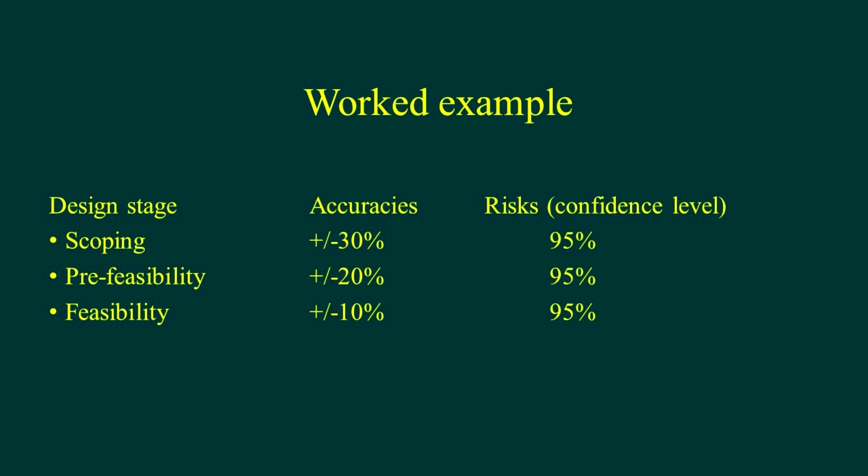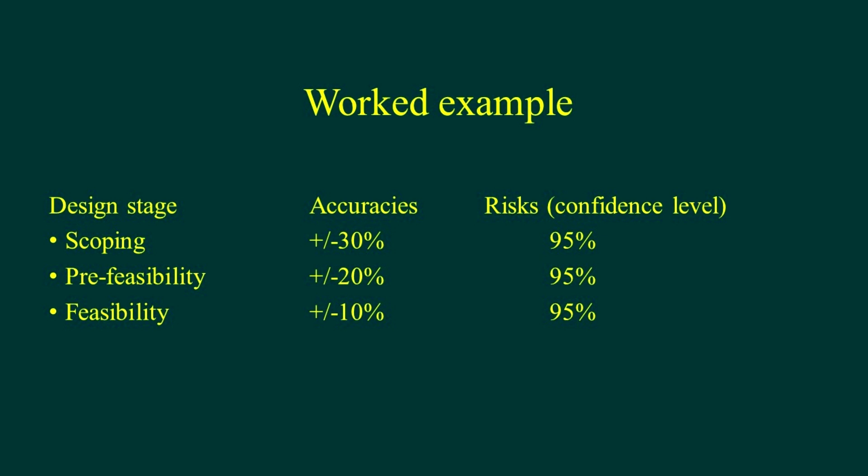Let's do a worked example. We're going to go through scoping, pre-feas, feasibility. The boss has said, I want 30% for scoping, 20% for pre-feas, and 10% for feasibility. And it's got to be done at the 95% confidence interval. That's the risk, small risk associated with that. To do this exercise, obviously, if we were given this exercise in the greenfield, we would know nothing about the deposit. We, in this case, do know something. This comes from the SMC test database. It's a Chilean copper company. I'm not going to tell you which one. It's got over 2,000 samples associated with it. And we know it has a beautifully normal distribution. And we are going to use that to sample from. And we're going to generate some statistics, and we're going to play a game going through scoping, pre-feas, and then feasibility study.